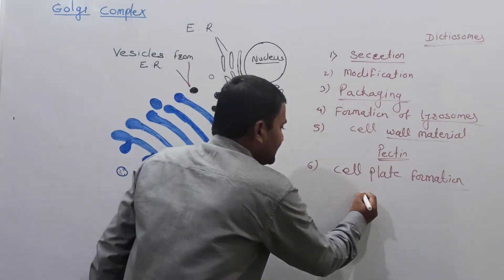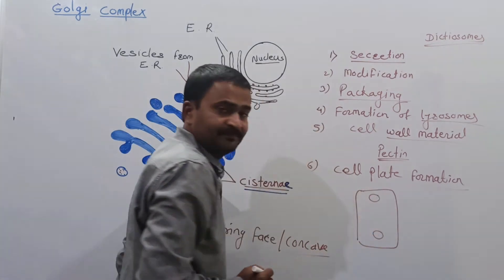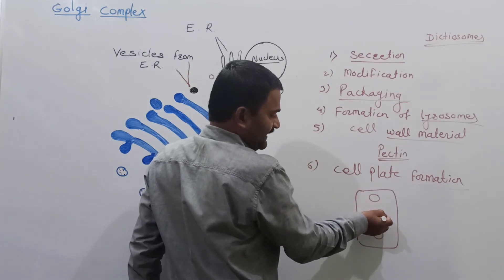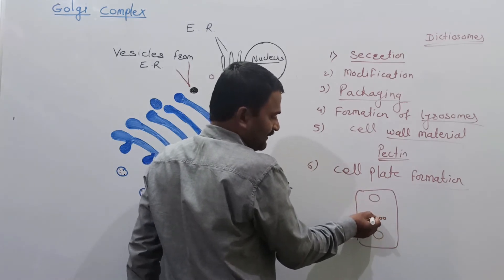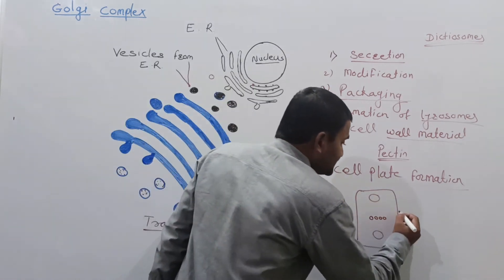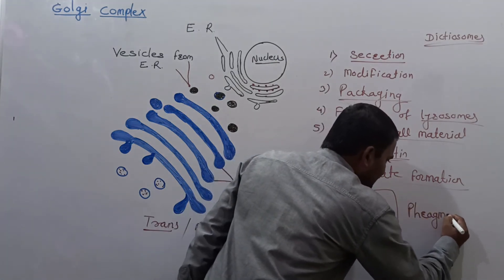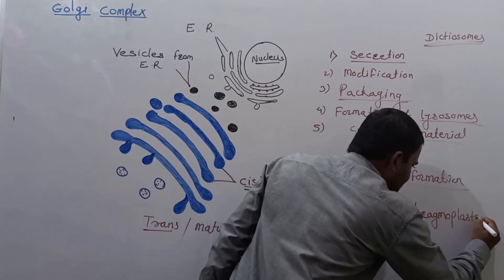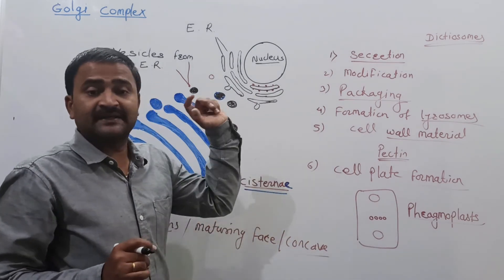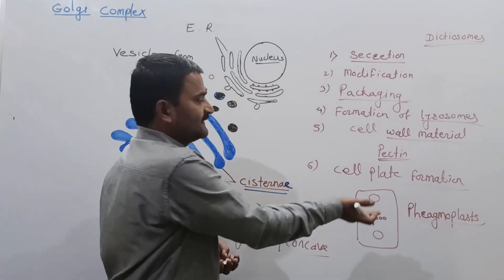During cell division, after the nucleus divides into two nuclei, the Golgi complex helps form the cell plate, which is the structure that separates the two daughter cells.